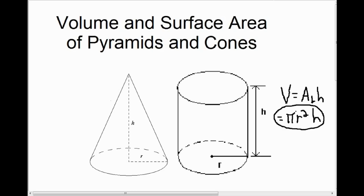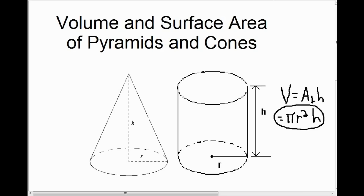The relationship between a cone and a cylinder is similar to the relationship between a square-based pyramid and a square-based prism. If you were to fill up a cone-shaped cup with water — as long as the radius and height are the same as the cylinder — it would take three cupfuls to fill up the cylinder. So the cylinder has three times the volume of the cone, and to get the volume of the cone, we divide the cylinder's volume by three.